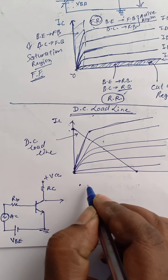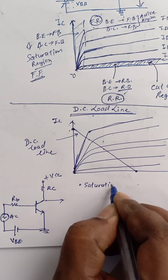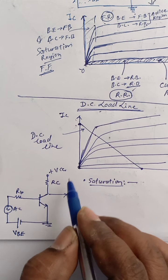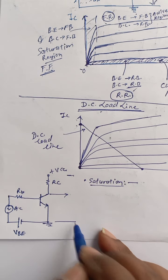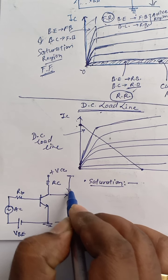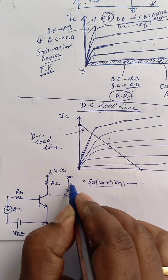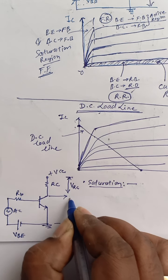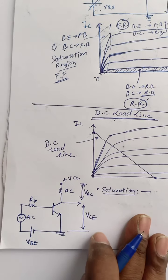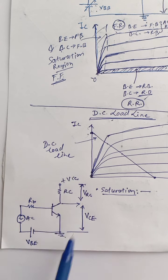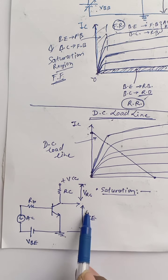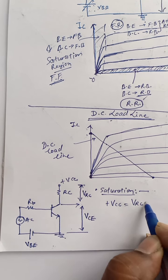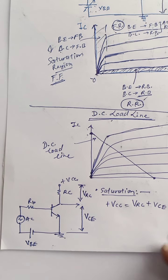Consider when the transistor is operated in saturation. Consider this loop — there is a voltage drop across RC. We name it as VCE across the transistor. If you observe this circuit: VCC equals voltage drop across the transistor plus VRC. So VCC equals I_C × RC plus VCE. This is the output equation.